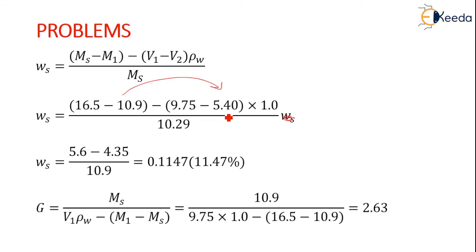ρw is 1 gram per cc. So ws equals, after calculation, 0.1147. If it is taken in percentage, it is 11.47%.